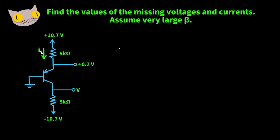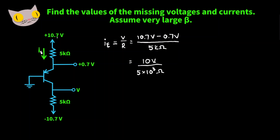The emitter current is going to equal the voltage over the resistance. We take 10.7 volts and subtract 0.7 volts, divided by 5k ohms. That gives us 10 volts over 5 times 10 to the third ohms, which gives us 2 milliamps.